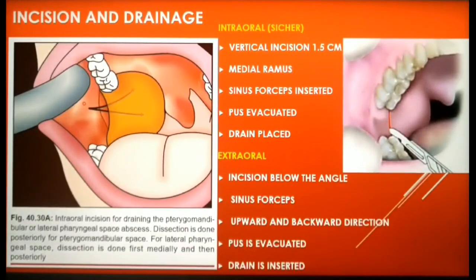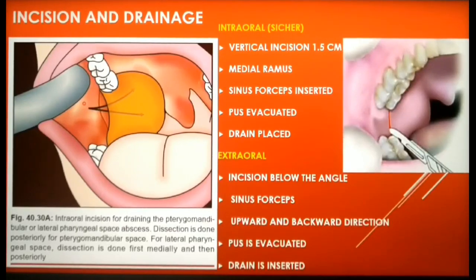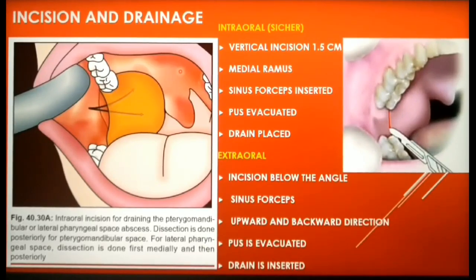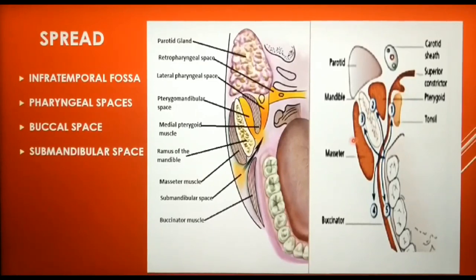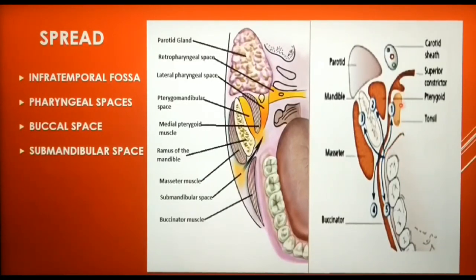In such cases, an extraoral approach is taken: an incision is made in the skin below the angle of the mandible, a sinus forceps is inserted towards the medial side of the ramus in an upward and backward direction, pus is evacuated, and a drain is inserted from an intraoral approach and sutured in position. These diagrams show the pathway of spread of infection from the pterygomandibular space to neighboring and distant spaces.